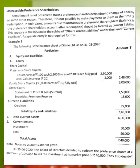Untraceable Preference Shareholders — which means Preference Shareholders where the principal amount is ready to be redeemed, but one person among those Preference Shareholders cannot be accessed or approached.